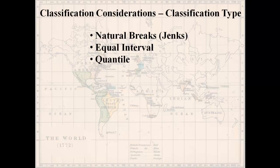Quantile classification asks: how many data points are we representing? Let's say we have 100 points and we want five intervals. The computer ranks the data from low to high and cuts the intervals so that each one has the same number of points — in this case, 20 points per interval.